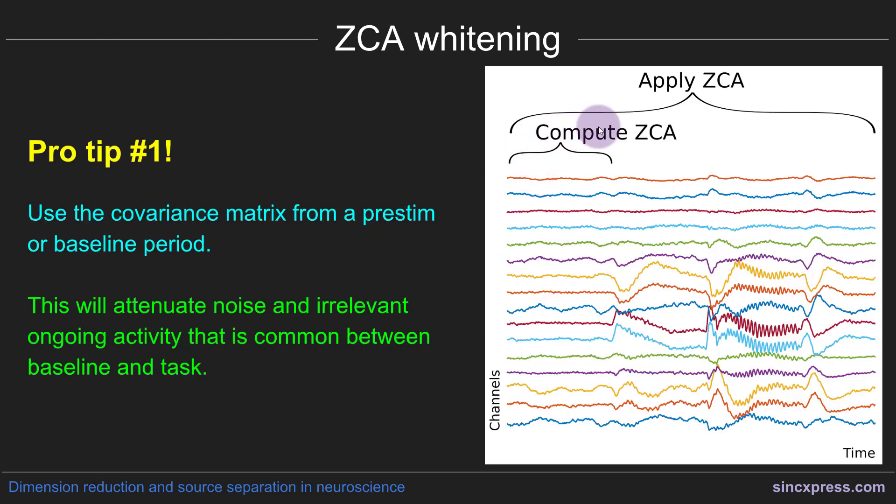So what you can do is compute the eigenvectors and eigenvalues for the whitening based on a little bit of data, let's say pre-stimulus data. And then once you get these eigenvectors and eigenvalues, you can then apply that to the entire time series, even though you didn't expose the ZCA method to any of these data. The effect of this is going to be to attenuate not only noise but also irrelevant ongoing activity that is common between the baseline period or the pre-stimulus period and the task or stimulus processing period.